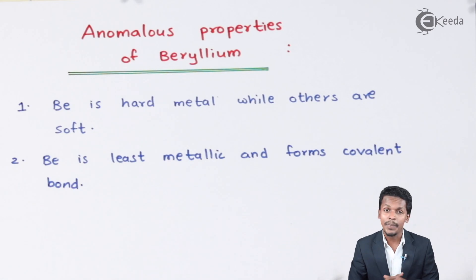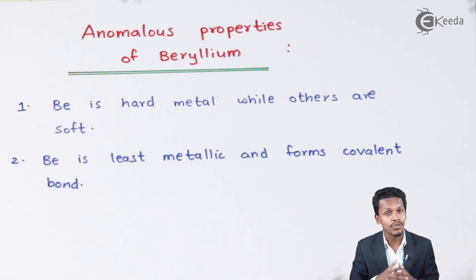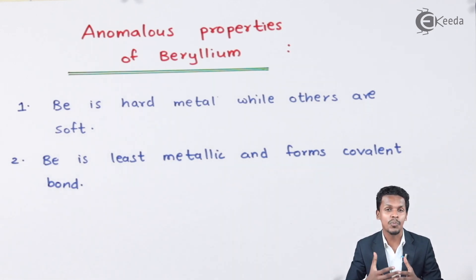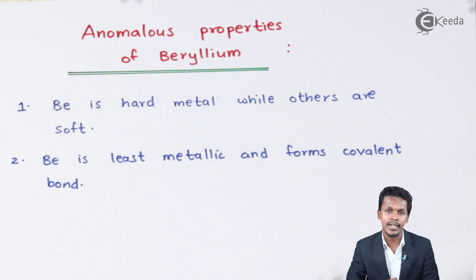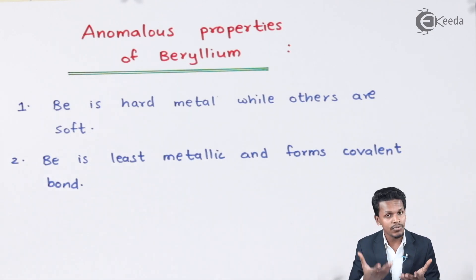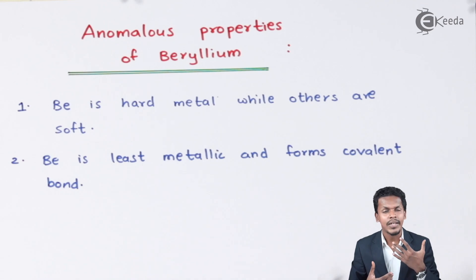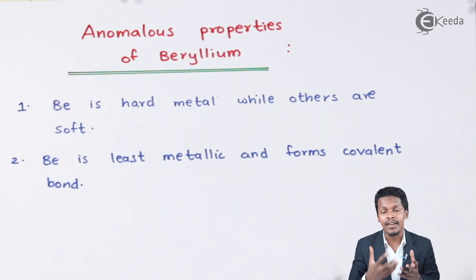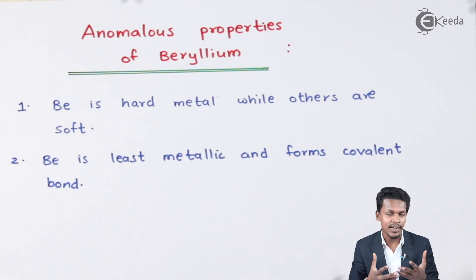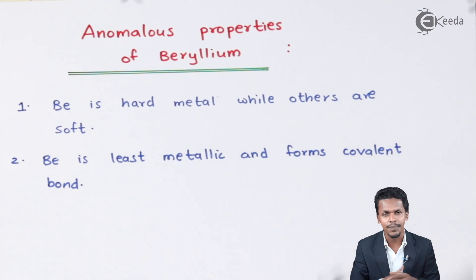The second point is that beryllium is the least metallic and it forms covalent bonds. Talking about s-block elements, they are more electropositive and that's the reason whenever they are combined with any non-metal like oxygen or a halogen atom, they form an ionic bond. That's why they are ionic in nature — for example, MgCl₂ is ionic in nature.